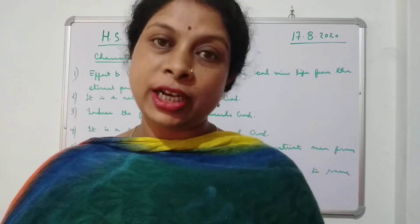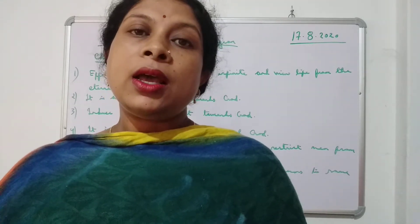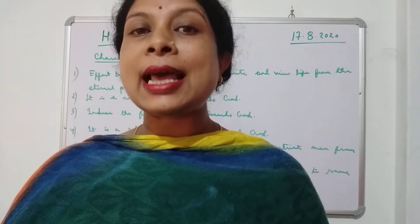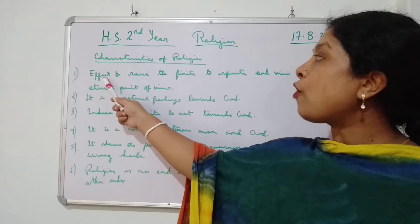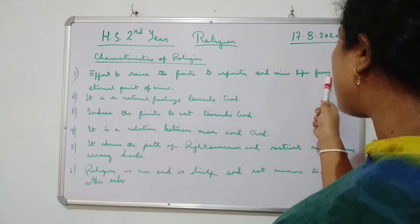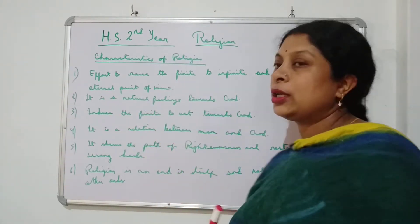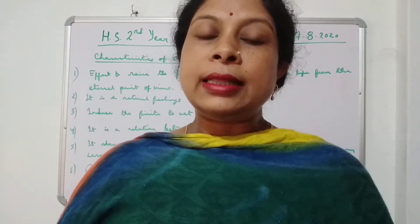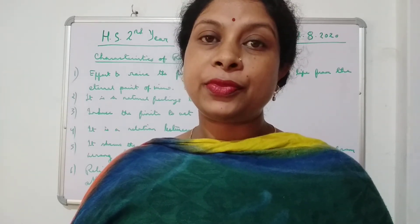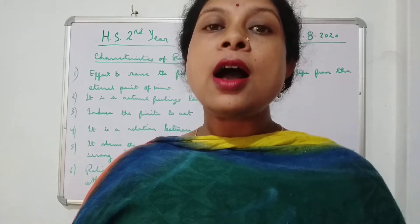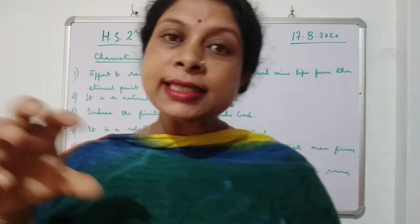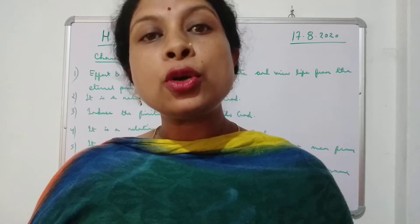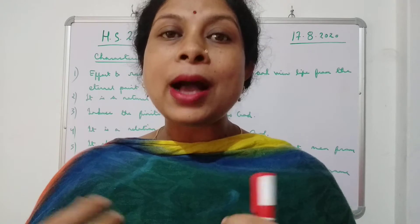Now let us start with the characteristics of religion. There are six characteristics of religion. The first characteristic: religion is an effort to rise the finite to infinite and view life from the eternal point of view. This is the first characteristic. Religion का मतलब God center है — God is the center of the religion. अगर God नहीं होते, तो फिर religion भी नहीं होता। Religion का मतलब है God को पाना, God को खुश करना, God के प्रति हमारे devotion और feelings।